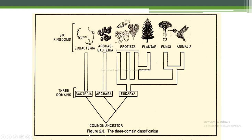When these three domains are further divided, they give rise to six kingdoms: Eubacteria, Archaebacteria, Protista, Plantae, Fungi, and Animalia, as shown in the figure.